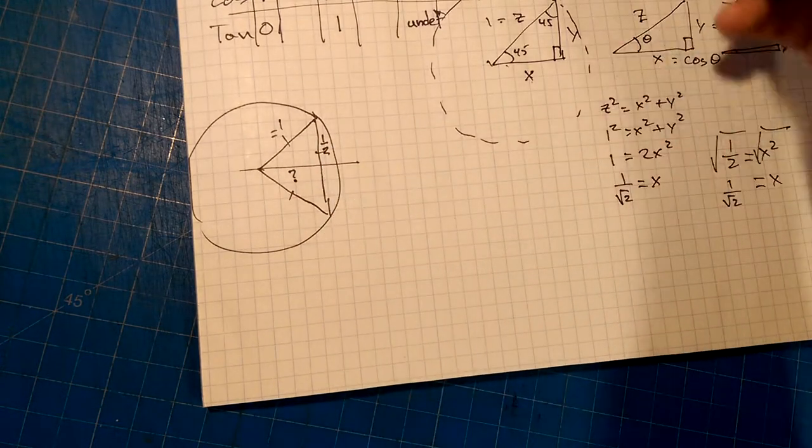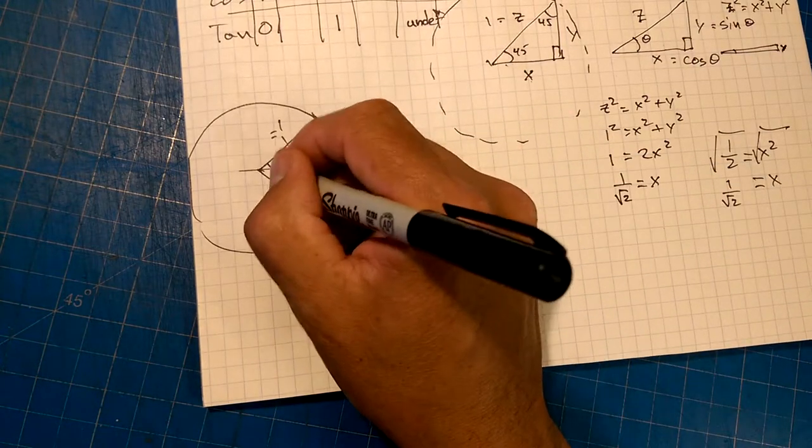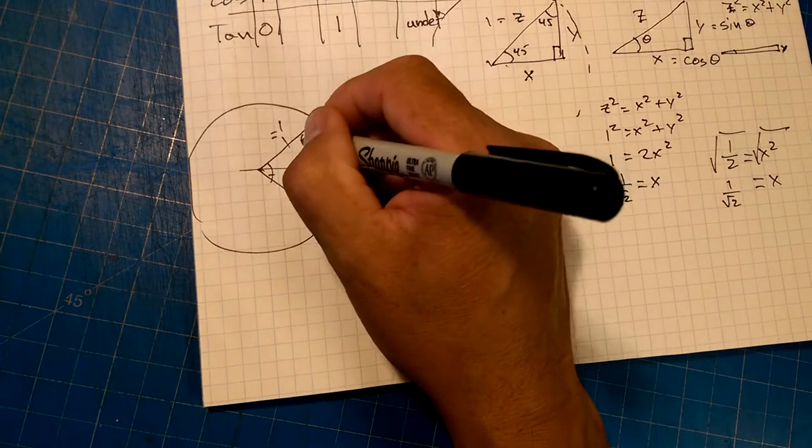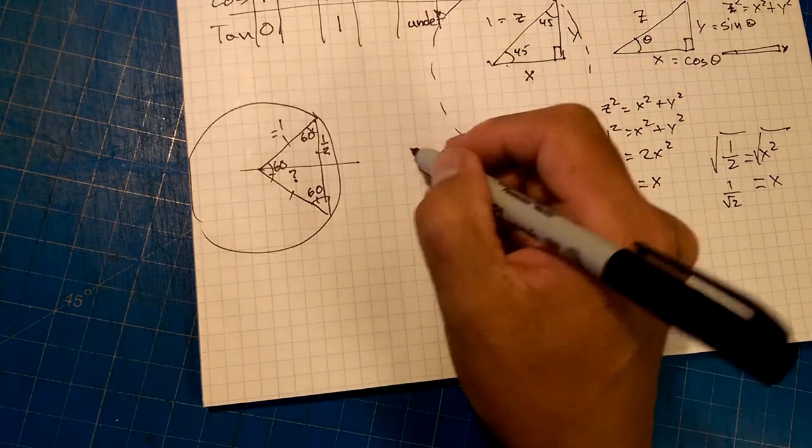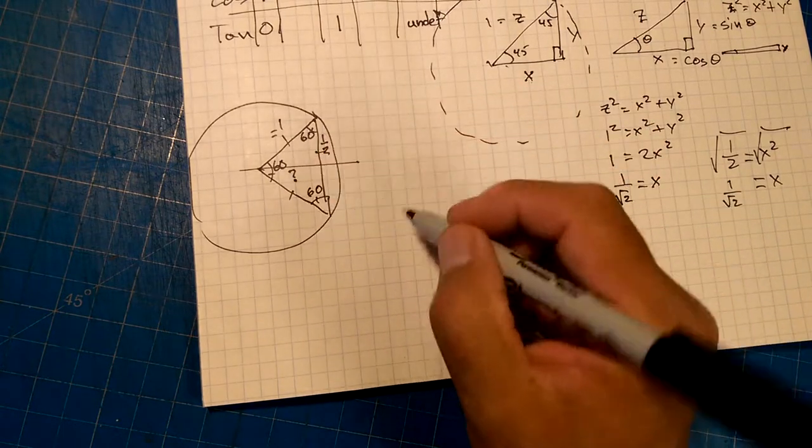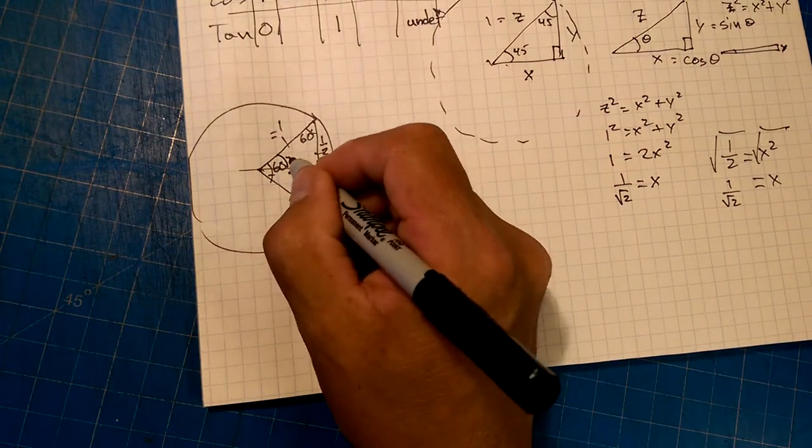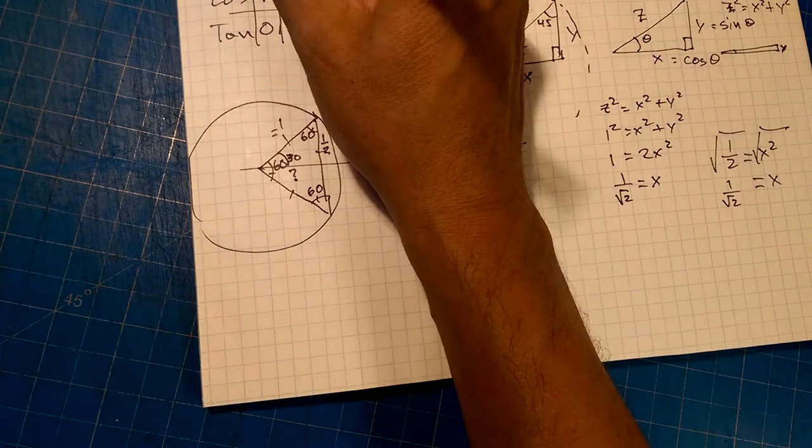so since these are all equal angles, so that's equal to that, that's going to be 60, that's going to be 60, and that's going to be 60, right? Angles in a triangle add up to 180, so that means this angle here is 30, so that means sine of 30 is 1 half.